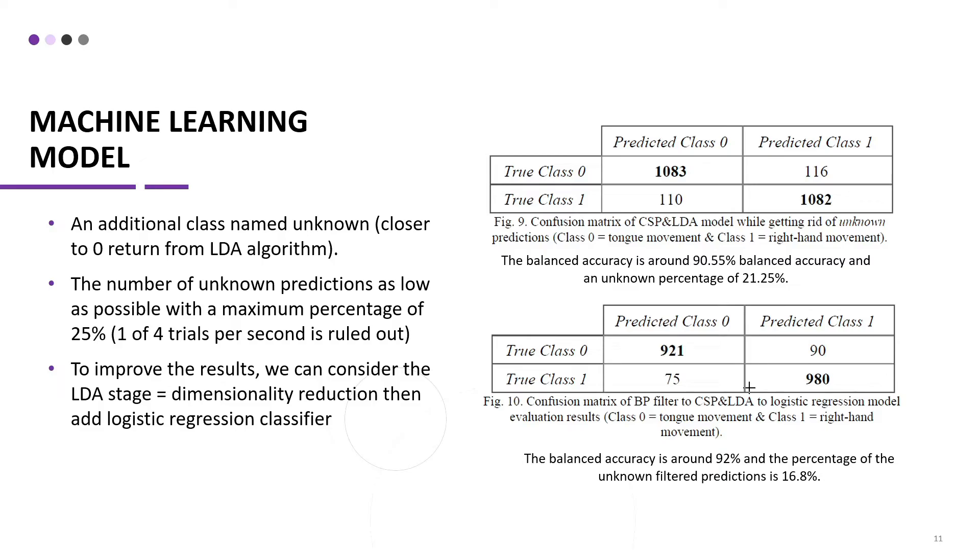After that, we apply the bandpass filter, the CSP and LDA, we classify unknowns as well, and then as an additional method, the LDA here is not considered as a classifier, but rather as a dimensionality reduction technique. Then, a logistic regression model is used in order to classify the results. The balanced accuracy has risen to 92%, with unknown filtered predictions limited to lower than 16%.